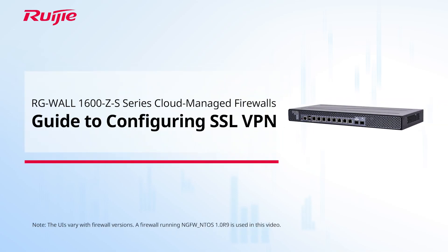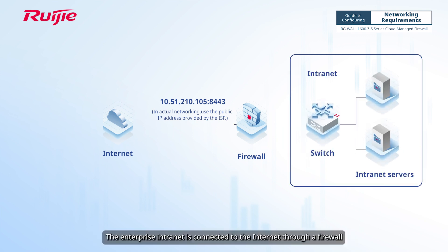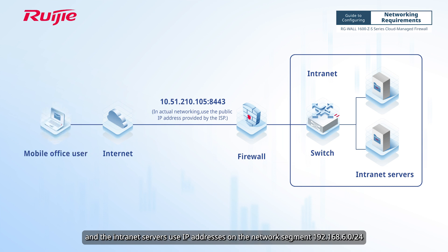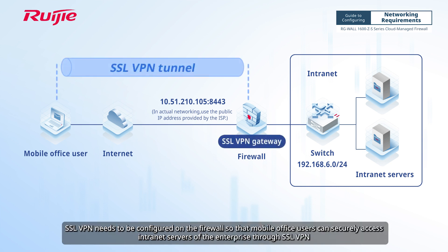This video introduces how to configure SSL VPN on the RGWALL 1600 ZS-Series cloud-managed firewalls to enable mobile office users to remotely access internal resources of enterprises. The enterprise intranet is connected to the internet through a firewall, and the intranet servers use IP addresses on the network segment 192.168.6.0/24. SSL VPN needs to be configured on the firewall so that mobile office users can securely access intranet servers of the enterprise through SSL VPN.